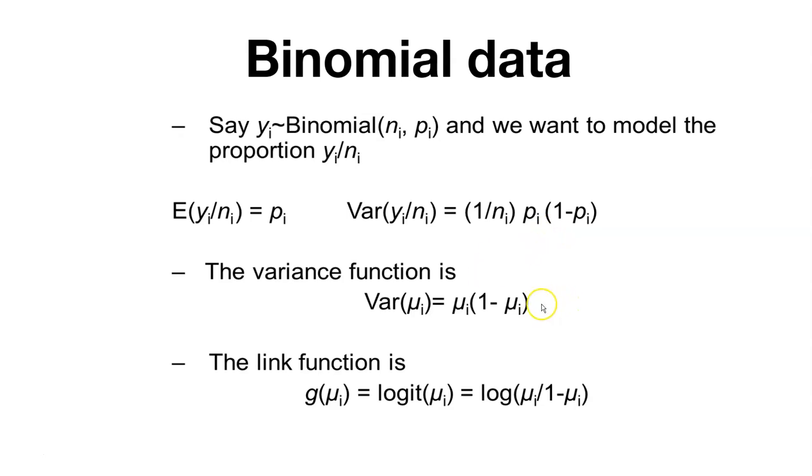Same thing for the variance. We know the variance. Then we can replace mu sub i with y sub i over n sub i to represent our population that we're interested in.